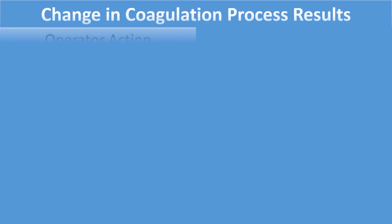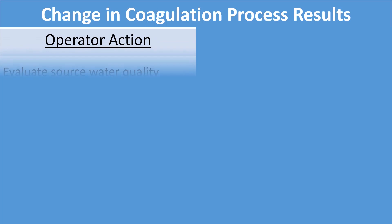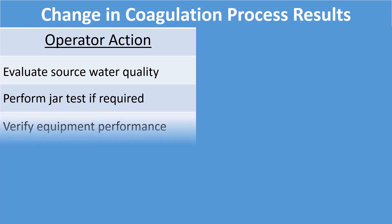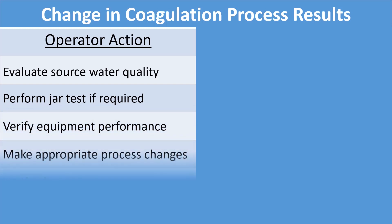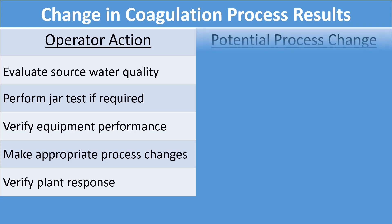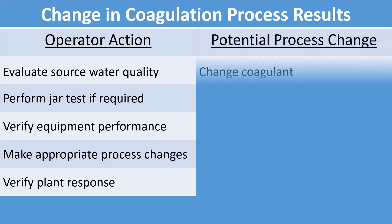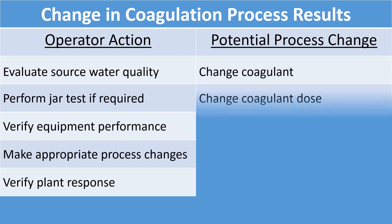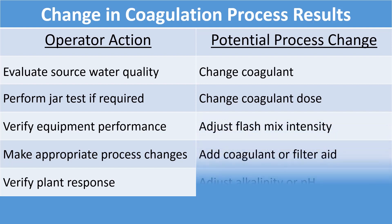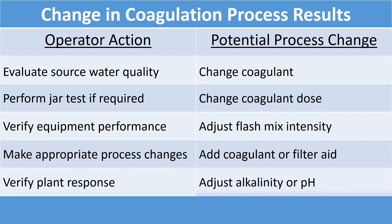If there is a change in coagulation process results, similar operator actions are required. You evaluate the source water quality, perform a jar test if required, verify that equipment is performing properly, and make any changes as appropriate. Then verify plant response after any change is made. Potential process changes include changing the coagulant, adjusting your dose, adjusting flash mix intensity, adding a coagulant or filter aid, or adjusting the alkalinity or pH. These actions are very similar in both circumstances.